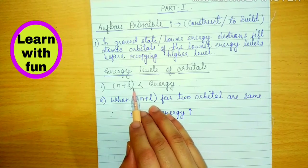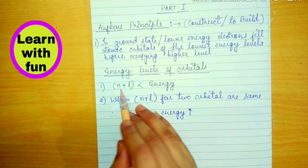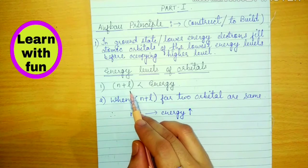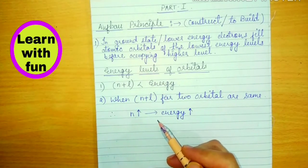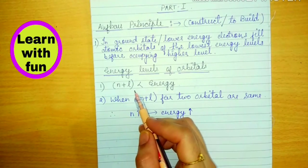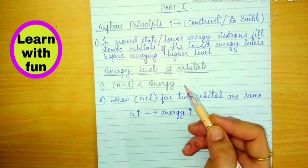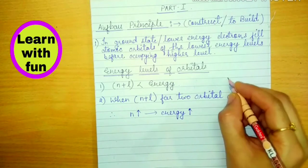To find that out, Aufbau principle uses a rule, N plus L. In this rule, N stands for principle quantum number and L stands for azimuthal quantum number. N plus L is directly proportional to energy. It means whichever orbital has higher N plus L value will have higher energy.